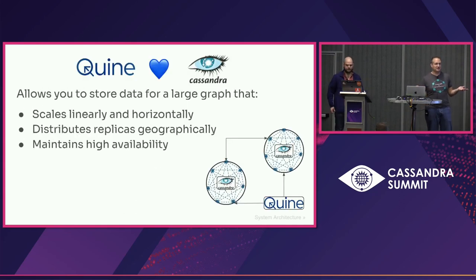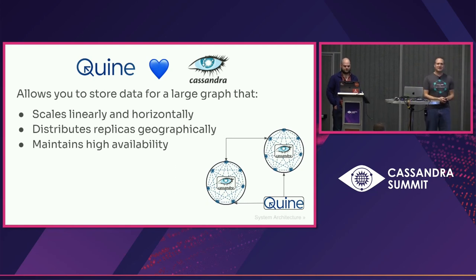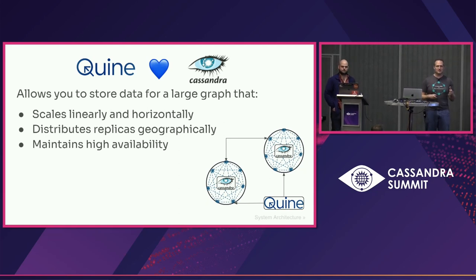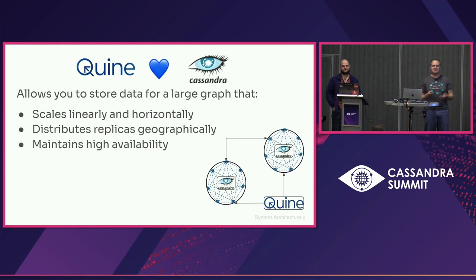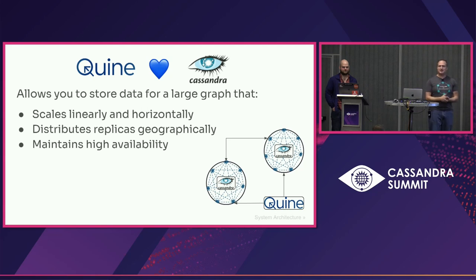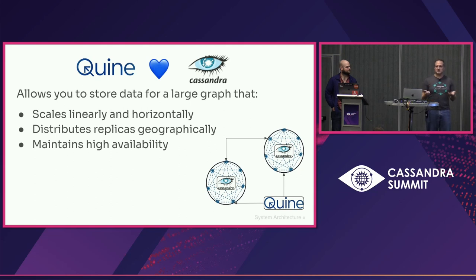And to get a little bit more into how that works, I'm going to hand off to Aaron now to talk about Cassandra. Cassandra — that's one of the reasons why we're all here. Just a quick poll of the room: how many consider yourselves new to Cassandra? The Cassandra that we all know and love scales linearly and horizontally. It distributes replicas geographically, which is probably my favorite feature of Cassandra. In all the years I've been using it — about 11 now — I haven't found another database that does this as well as Cassandra does. And of course, it maintains high availability.